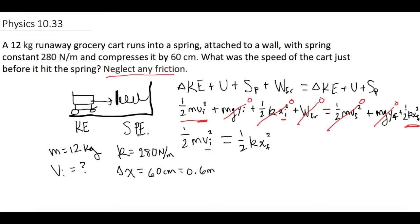Let's solve for V initial. Let's divide this whole side of the equation by one half M. We're left with V initial squared equals one half K X final squared divided by one half M. Both the top and the bottom terms have a one half, so that can be simplified out. Now we're left with velocity initial squared equals K delta X final squared over M.